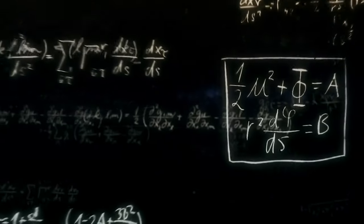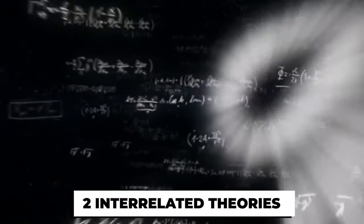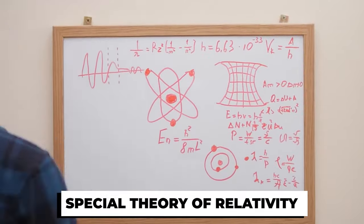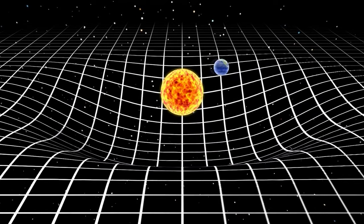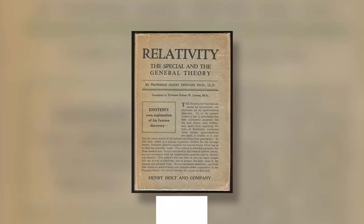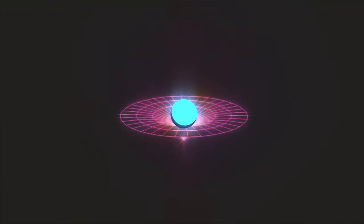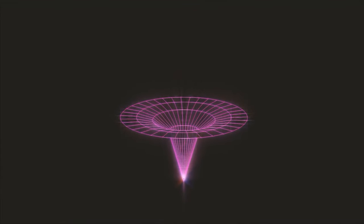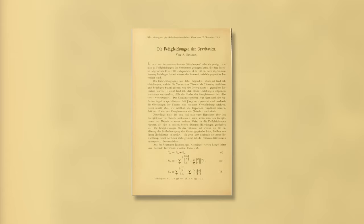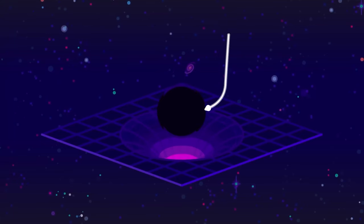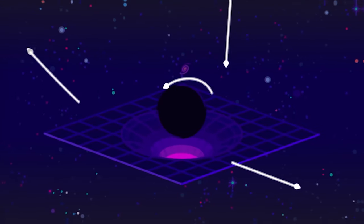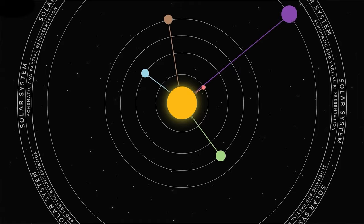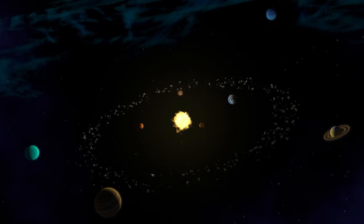Einstein's theory of relativity is a set of two interrelated theories: the Special Theory of Relativity and the General Theory of Relativity. The Special Theory of Relativity, published in 1905, describes the laws of physics in the absence of gravitational fields, while the General Theory of Relativity, published in 1915, explains the behavior of objects in the presence of gravitational fields. The theory of relativity fundamentally changed the way we understand space and time.